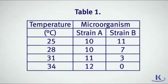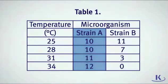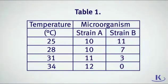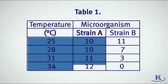Let's try one with data in a table. Take a look at Table 1. What does this table show? The effects of temperature on the rate of growth of two strains of microorganisms. What are the units of measurement? Degrees Celsius. What happens to strain A as the temperature increases? Its rate of growth increases as temperature increases.